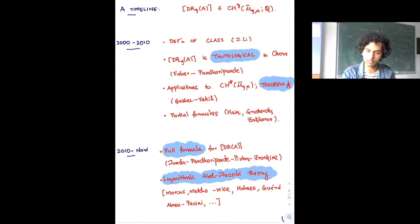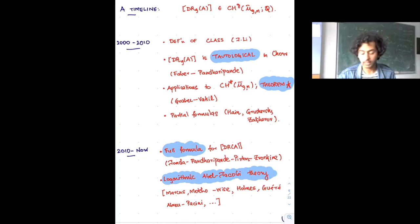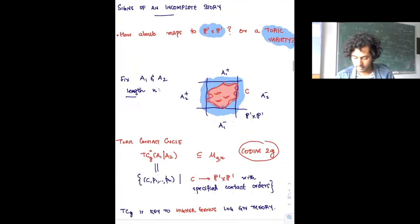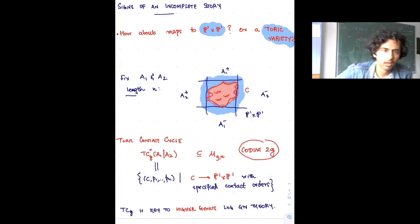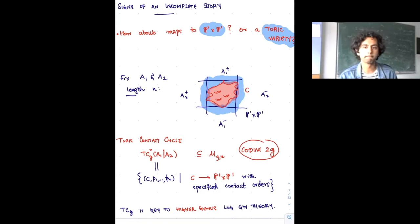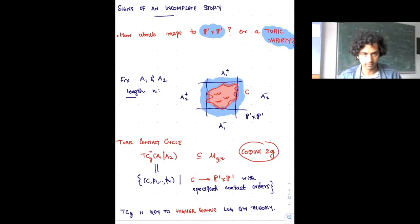That had a lot of important implications for the subject, including the development of logarithmic Abel-Jacobi theory. The situation in maybe 2016 looked fairly definitive: there's this natural cycle on the moduli space of curves, constructed using elementary geometry, and there's a formula for what that cycle is in terms of things we understand very well. Story over.